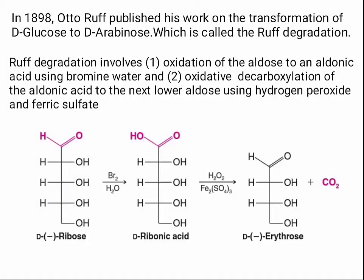In 1898, Otto Ruff published his work on the transformation of D-glucose to D-arabinose, which is called the Ruff degradation. Ruff degradation involves oxidation of the aldose to an aldonic acid using bromine water, and then oxidative decarboxylation of the aldonic acid to the next lower aldose using hydrogen peroxide and ferric sulfate.